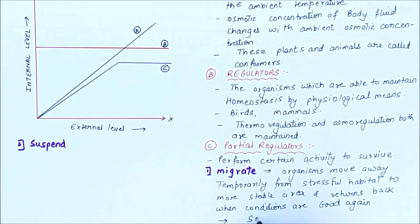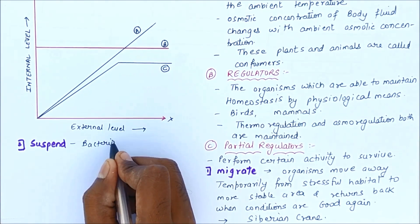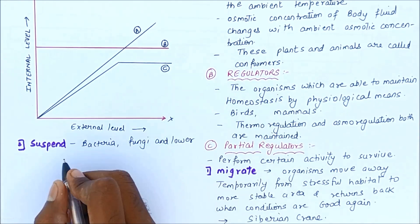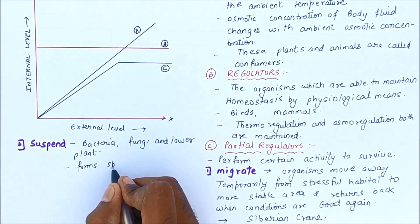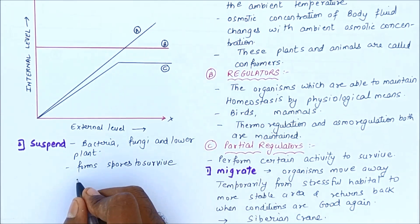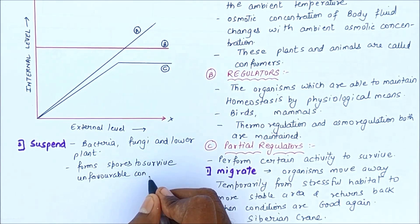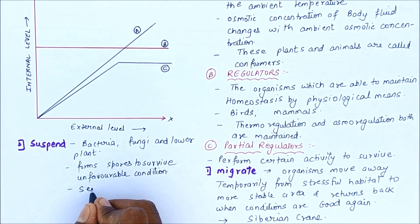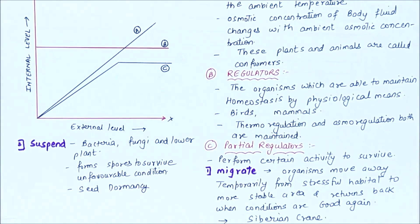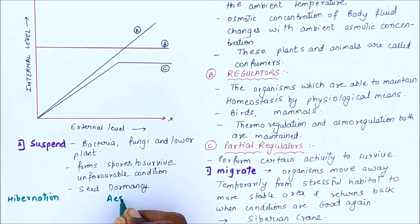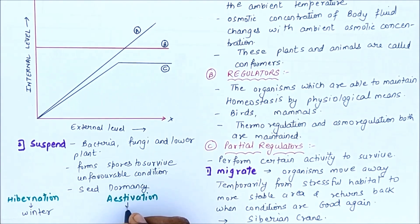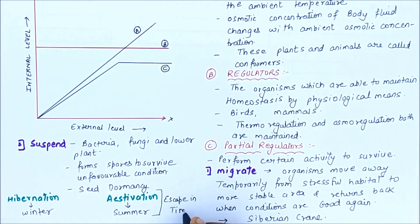Another strategy is suspension. Bacteria, fungi, and lower plants form spores to survive unfavorable conditions; when conditions become favorable, these spores germinate. Seed dormancy is another example — when conditions are unfavorable, seeds suspend their growth and undergo a dormancy stage. Hibernation is winter sleep, and aestivation is summer sleep — for example, frogs aestivate during summer. This is essentially escape in time.